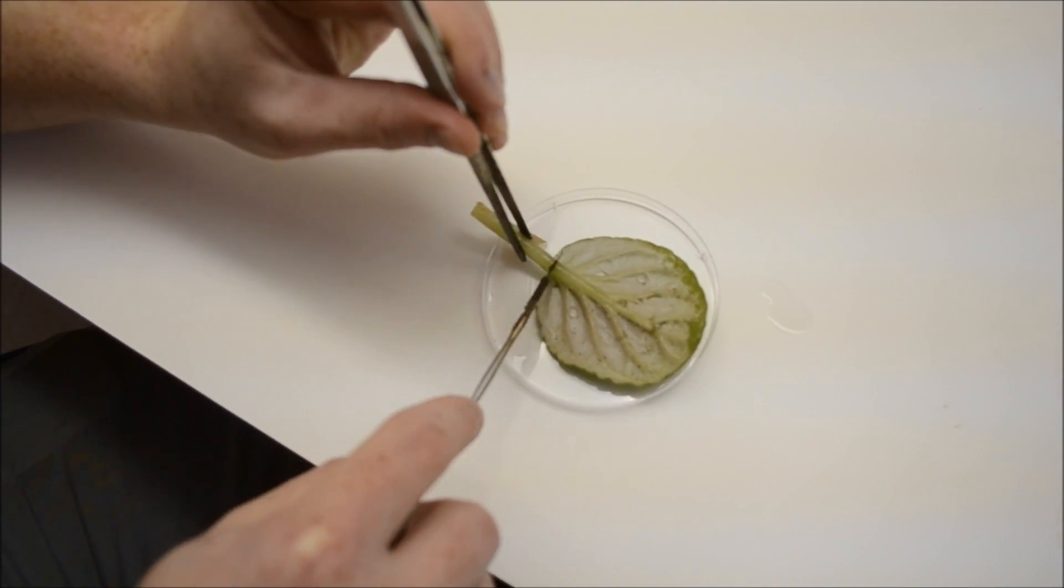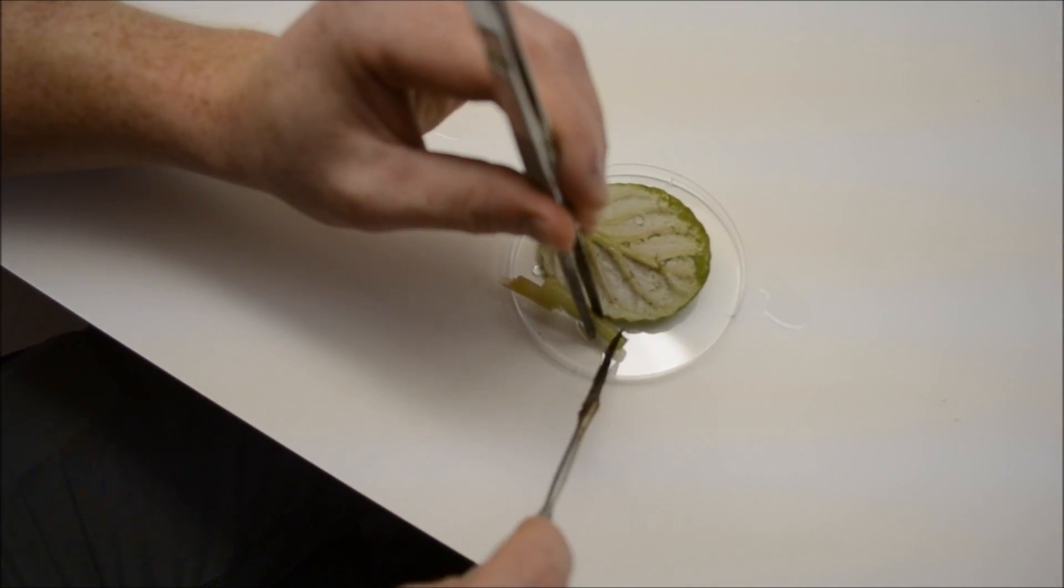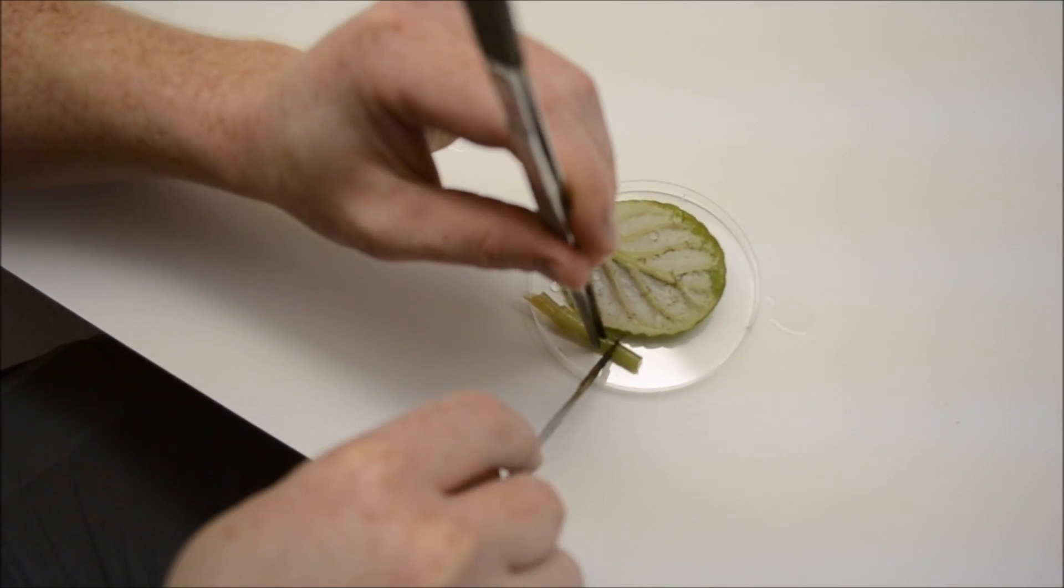Using your sterilized scalpel, remove all damaged tissue from the leaf and petiole. Then, cut the leaf and petiole into 1 cm sections.